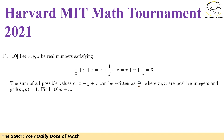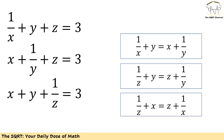Now let's see how we are going to solve this. Remember, we need to find the sum of all possible values of x plus y plus z. Let's start with some simplification. We have three equations, but if we just take two of these three equations we can remove one variable easily.